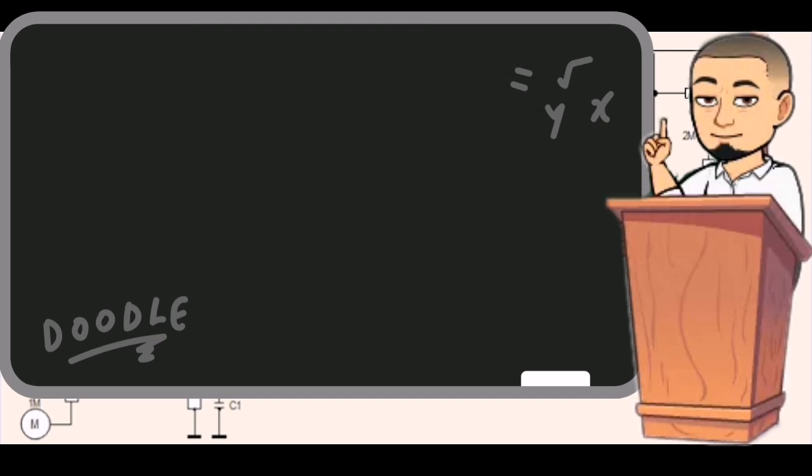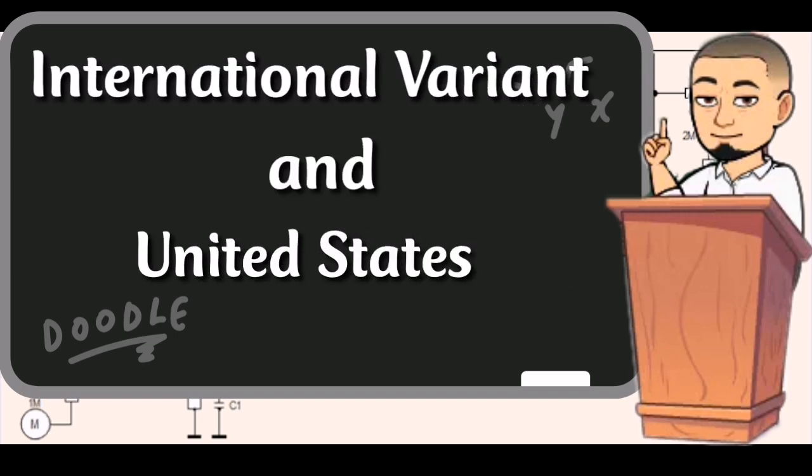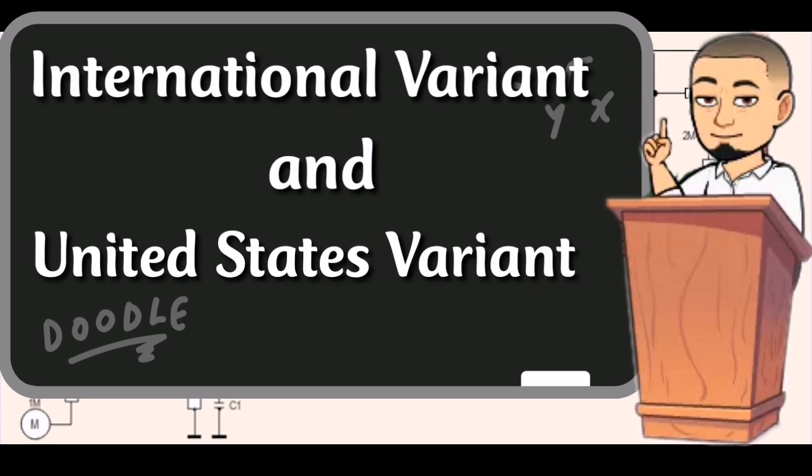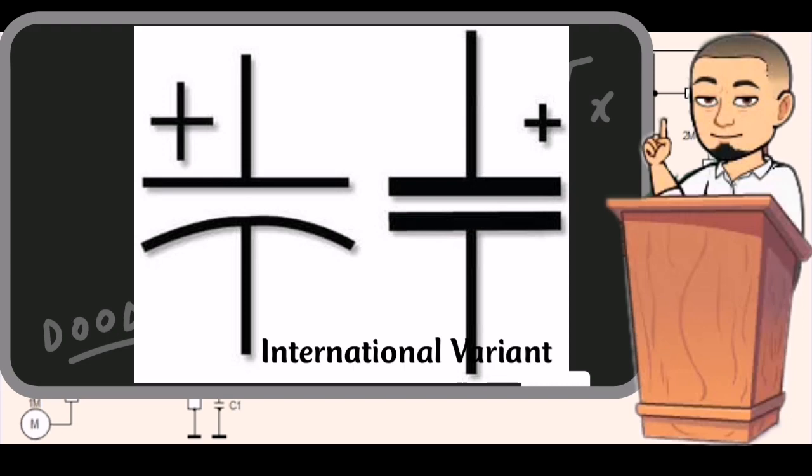Sometimes there are confusions in reading a schematic diagram because there are two designs of symbols, which are international variant and United States variant. Have a look at this example. This is the international variant symbol of a resistor, and this is the United States variant symbol. We also have the international variant symbol of a capacitor, and this is the United States variant symbol.